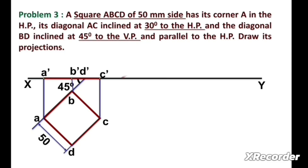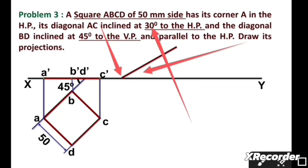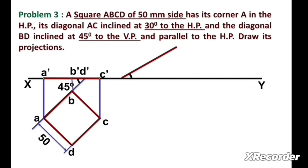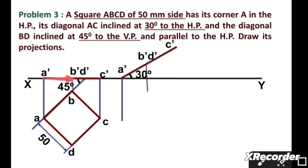Next, we draw a line at an angle of 30 degrees, because the question states that the angle with the horizontal plane is 30 degrees. We mark a point anywhere on the xy line, and the length of this line can be any length. We write the 30 degree angle here. We take radius A dash–C dash with A dash as center and draw an arc to get point C dash. Then, taking radius A dash–B dash with A dash as center, we draw another arc on this line to get points B dash and D dash.